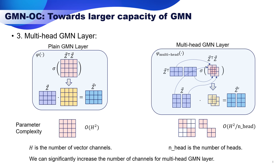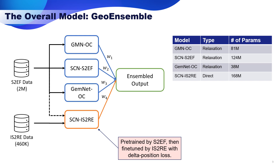All three core aspects mentioned here are important for the performance of our model on OC data. The overall model, named Geo-Ensemble, is an ensemble of four geometric models: GMN OC, SCN by Lauren Siting et al., and GemNet by Gasteiger et al. Notably, SCN S2RE here is an SCN first pre-trained on S2EF 2 million data and then fine-tuned on S2RE data equipped with the delta position loss. The relaxed energy is then directly predicted without relaxation. The other three models are trained on S2EF 2 million data and then applied by the relaxation process to gather relaxed energy predictions. The results of four models are assembled by a linear weighted average scheme with coefficients determined by validation. The number of parameters of each model are presented in the table as well.